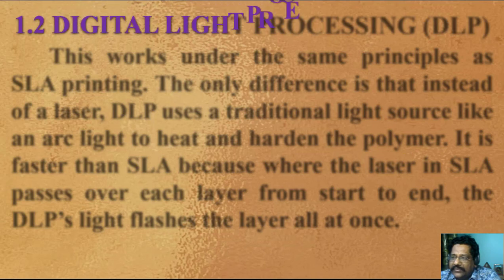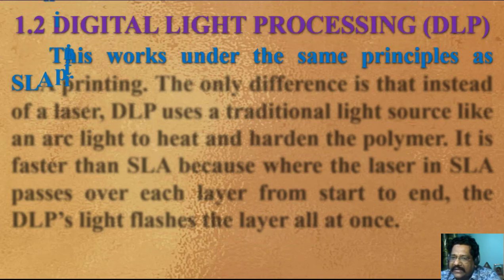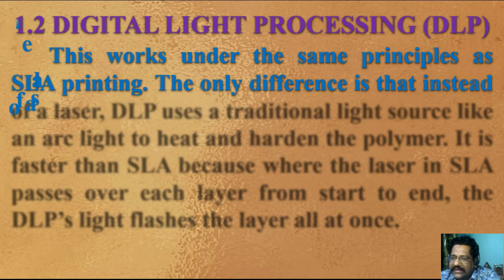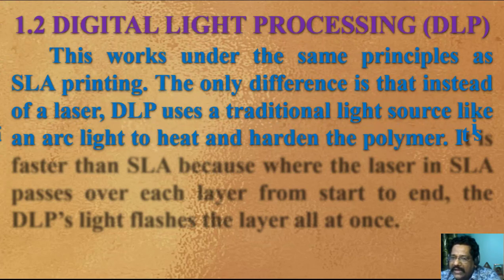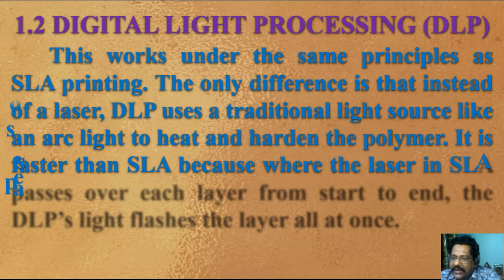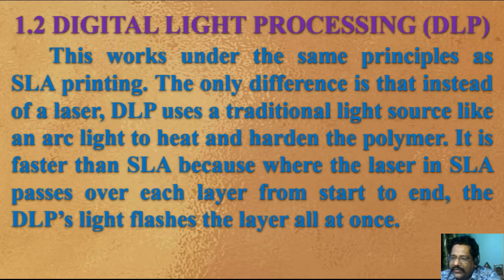Digital Light Processing DLP works under the same principles as SLA printing. The only difference is that instead of a laser, DLP uses a traditional light source like an arc light to heat and harden the polymers. It's faster than SLA because where the laser in SLA passes over each layer from start to end, the DLP's light flashes the layers all at once.